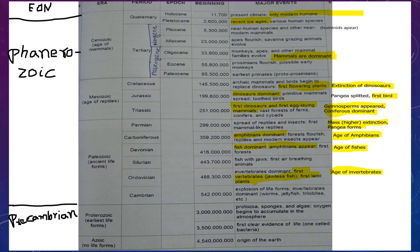Next is Devonian. Fish are dominant, so we can say it is the age of fishes — age of fishes is Devonian. First amphibians appear in Devonian, and the first forests appear. Next is Carboniferous: amphibians are dominant, so we can say it is the age of amphibians. Forests flourish, and reptiles and modern insects appear in Carboniferous.